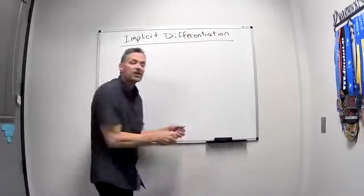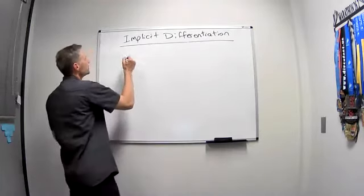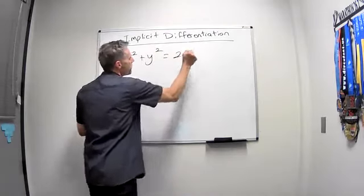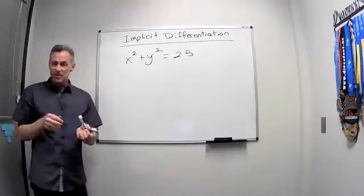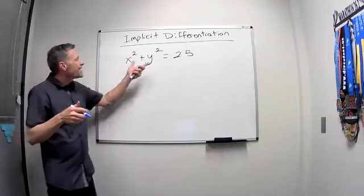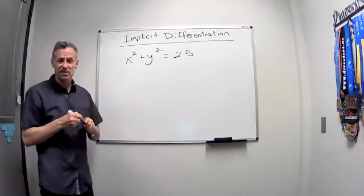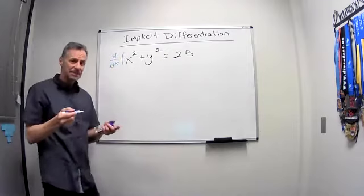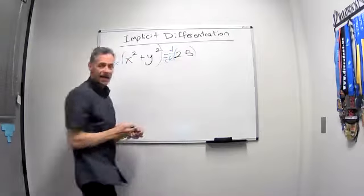All right, so we'll start with a fairly straightforward one. Let's do x squared plus y squared equals 25. So I've just got a circle. If I take the derivative, what I say is, okay, maybe I can, maybe I can't solve for the y. In this case, I could, it would be kind of ugly, because I have to take the square root. But let's take the derivative implicitly. And so I'm taking the derivative of both sides with respect to x.